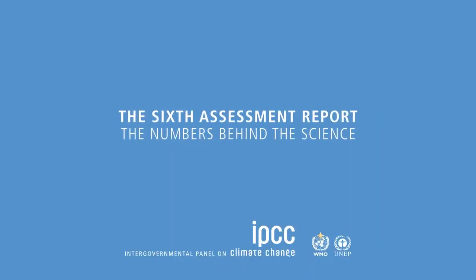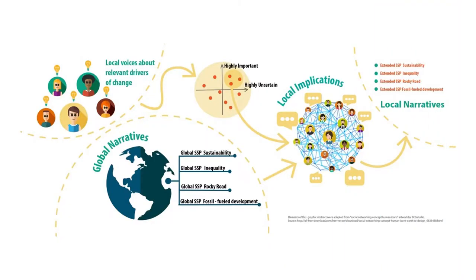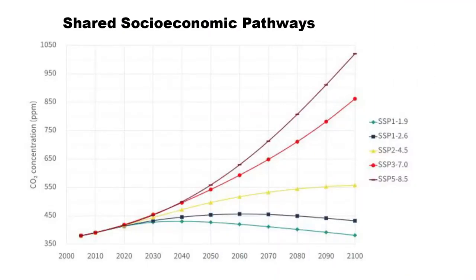The RCP 8.5 scenario represents continuously increasing greenhouse gas emissions throughout the 21st century, representing more fossil fuel use and less sustainable development. Quite recently, in 2021, the IPCC released a draft copy of the 6th assessment report with a new emission scenario known as the Shared Socioeconomic Pathways, or the SSPs, now being used as important inputs for the latest climate models to explore how societal choices will affect greenhouse gas emissions and how the climate goals of the Paris Agreement could be met.